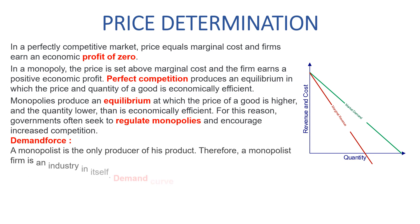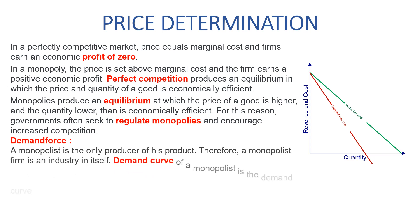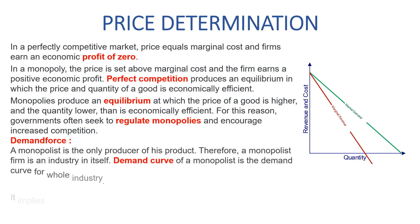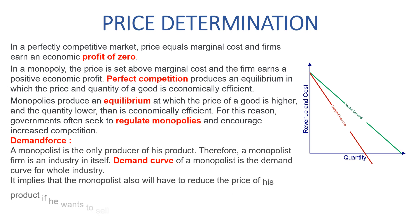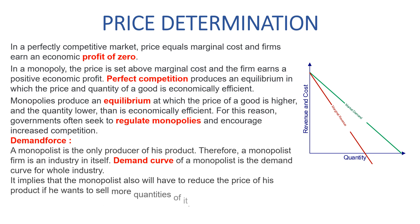Demand force. A monopolist is the only producer of his product; therefore, a monopolist firm is an industry in itself. The demand curve of a monopolist is the demand curve of the whole industry. This implies that the monopolist will also have to reduce the price of his product if he wants to sell more quantities of it.